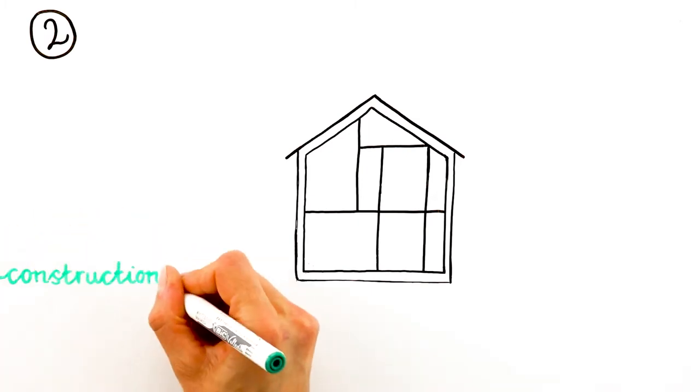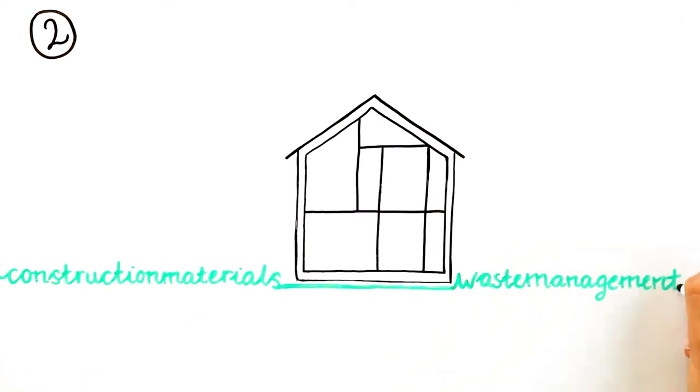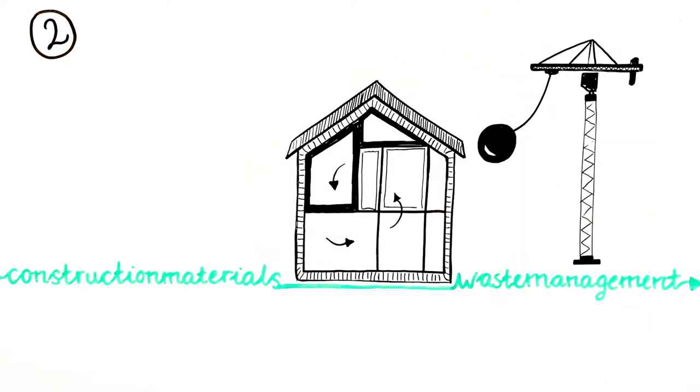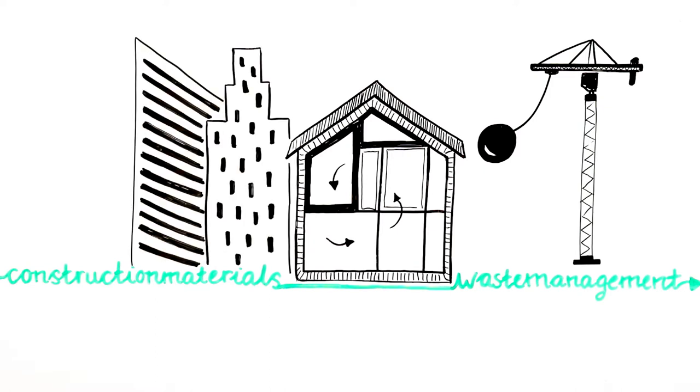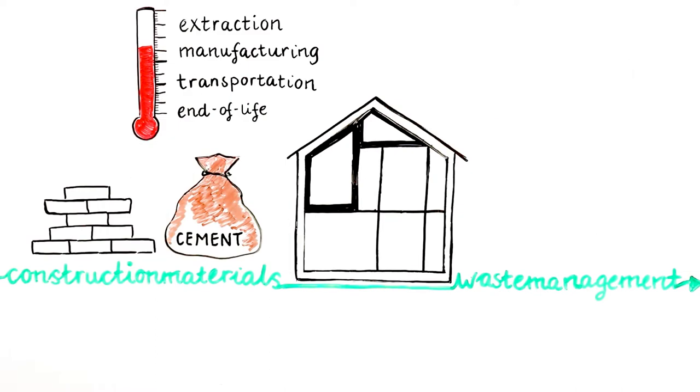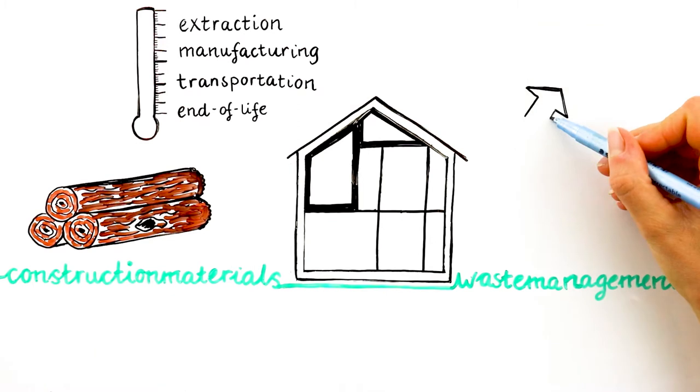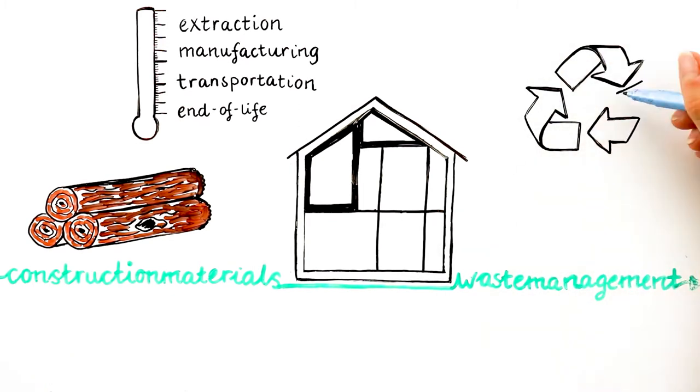The second most important consideration is choosing the right construction materials and waste management options. We should prioritise building retrofits over demolishing old buildings or building new ones, and choose construction materials with lower emissions in the extraction, manufacturing, transportation and end-of-life phase. For example, timber and low carbon concrete. Reusing and recycling construction materials and operational waste is also of great importance.